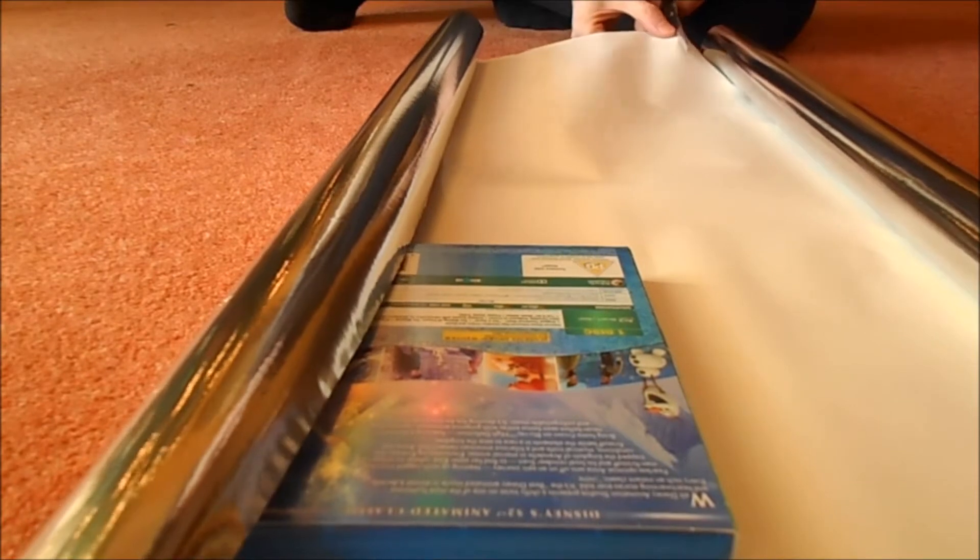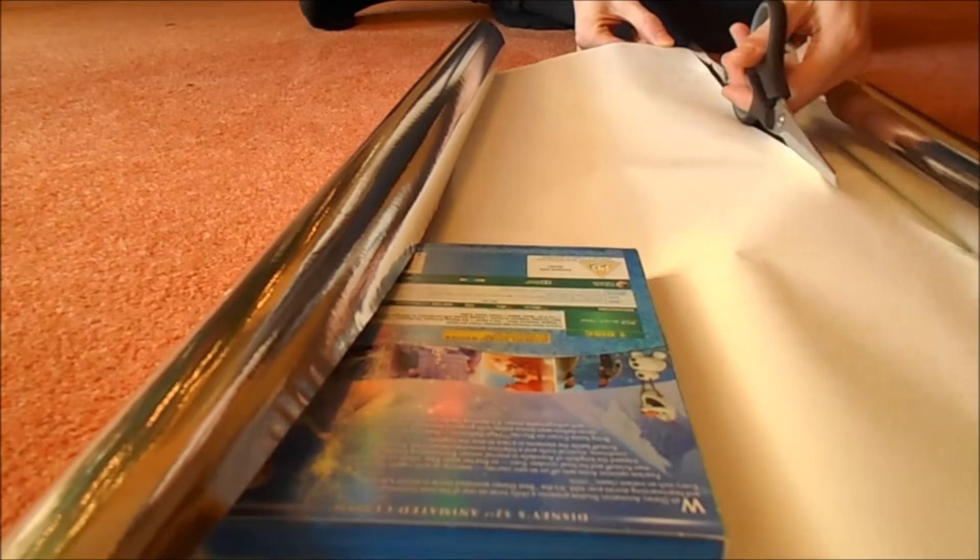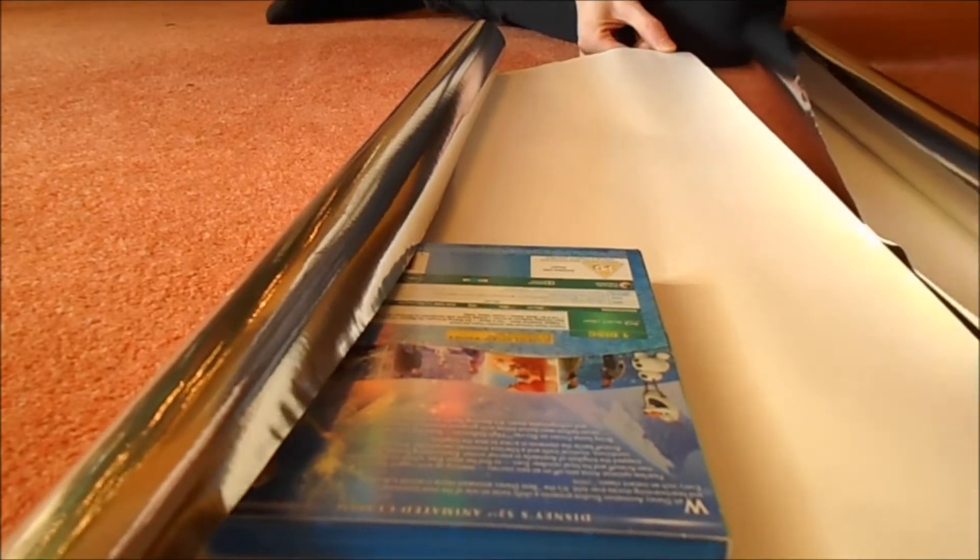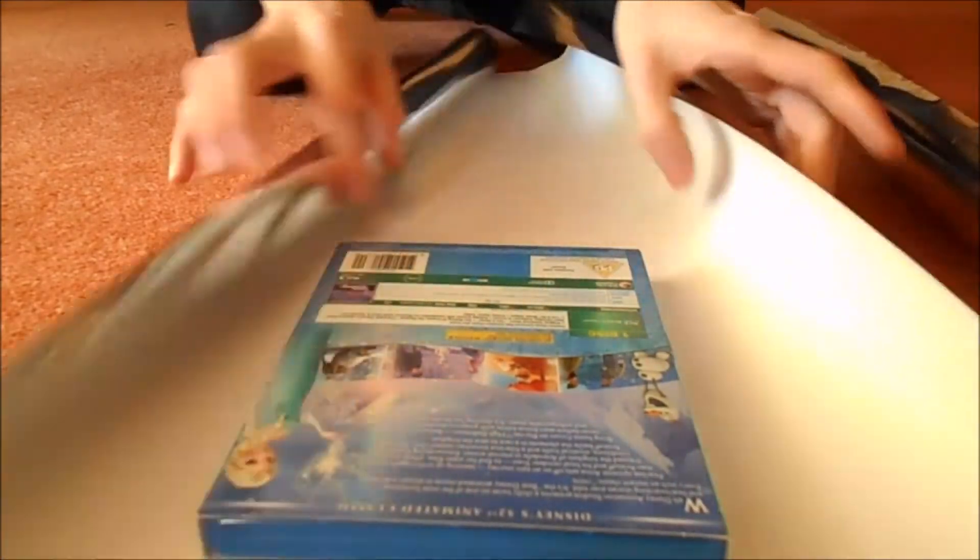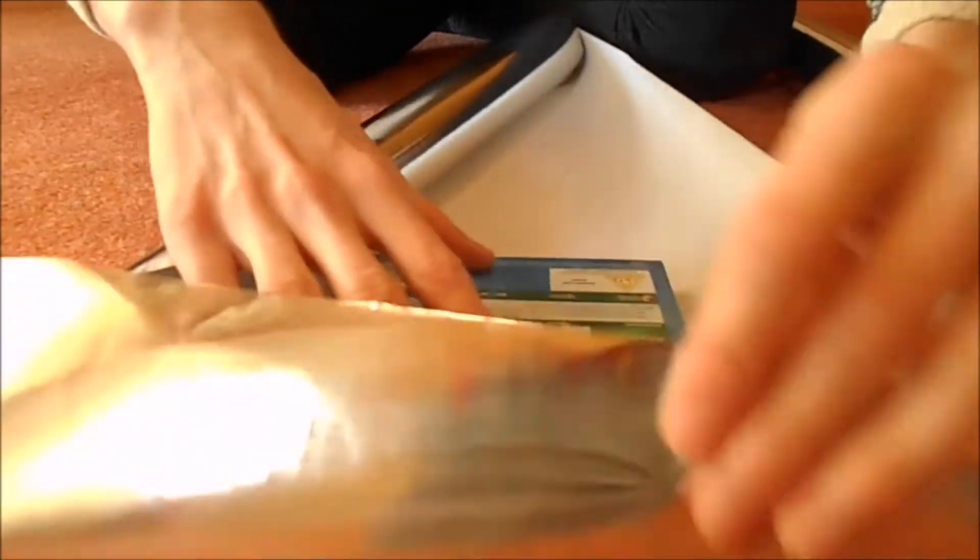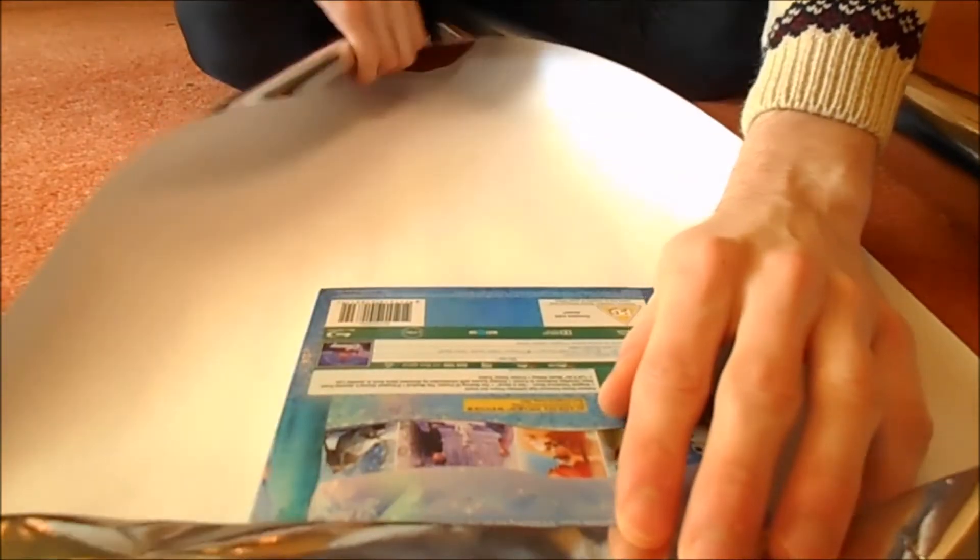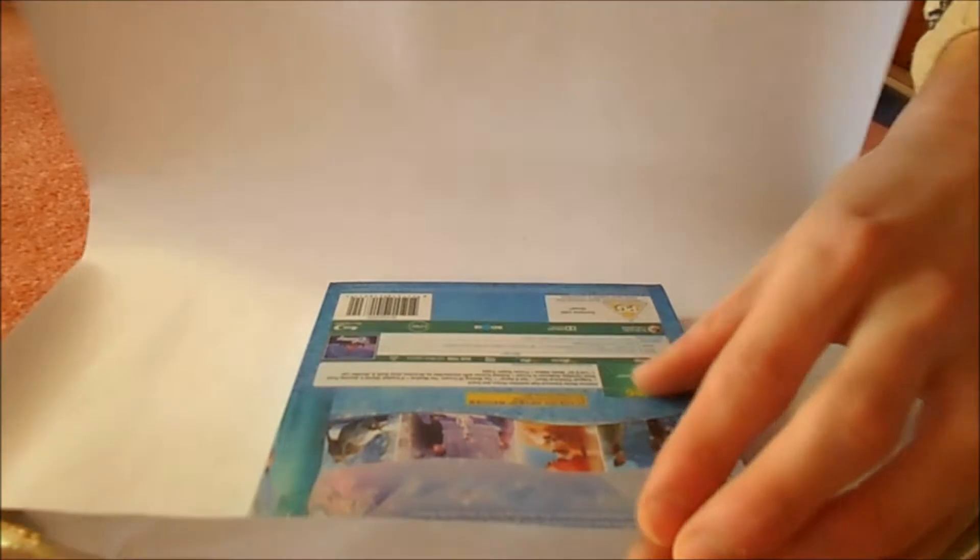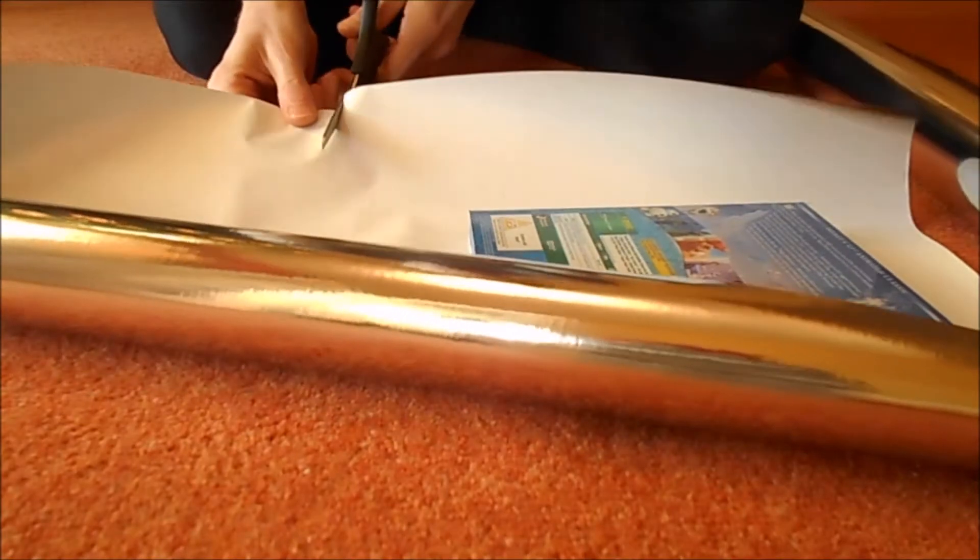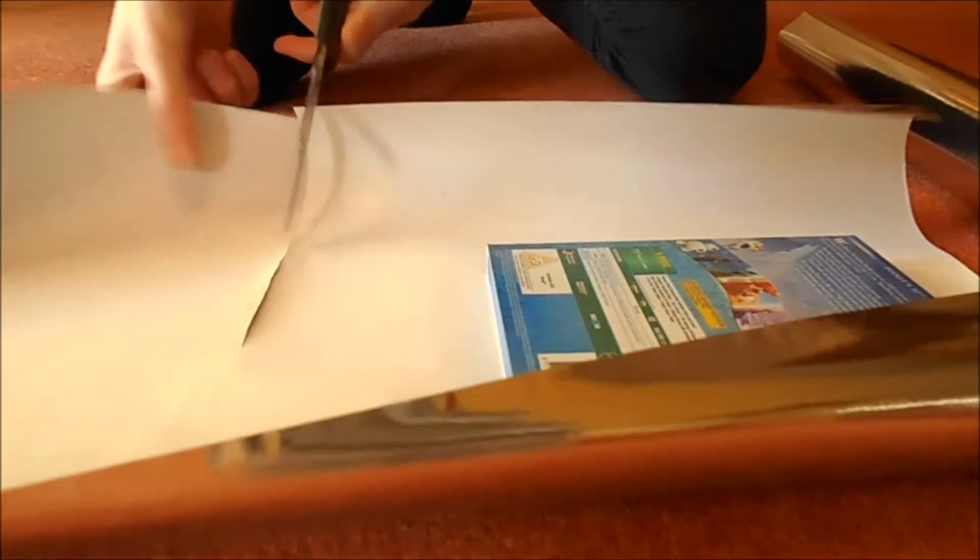So you're just going to cut along. Obviously you've got extra wrapping paper, but that's fine. Then you're going to do the same at this end, so you're going to have to use not as much for here and obviously not too much there either. You're just going to cut off about the same amount, about this much. But you want to make sure that it fits great, obviously.